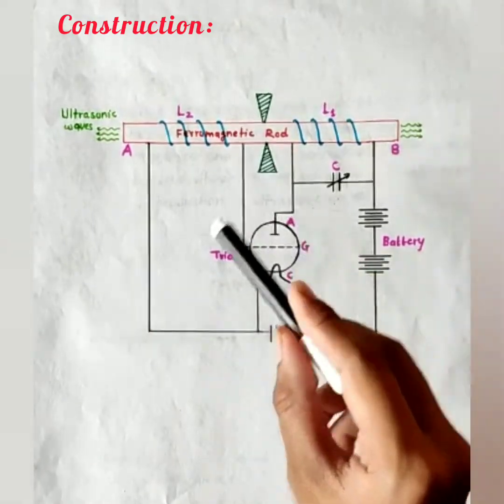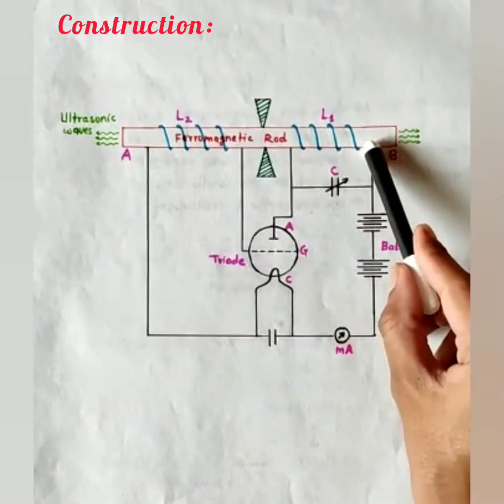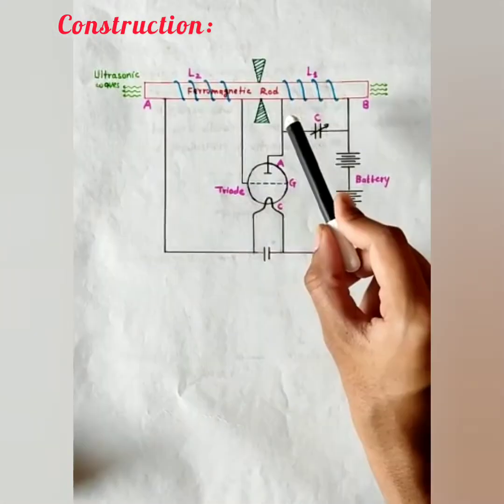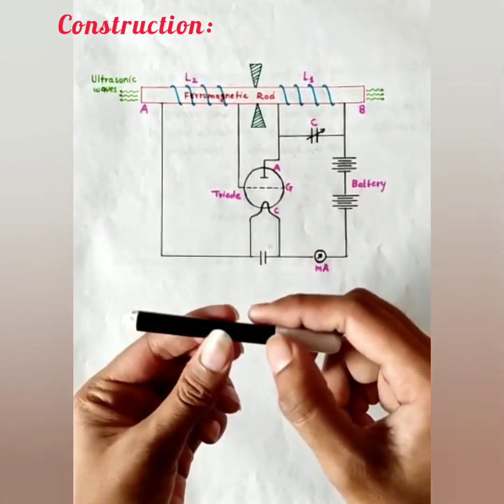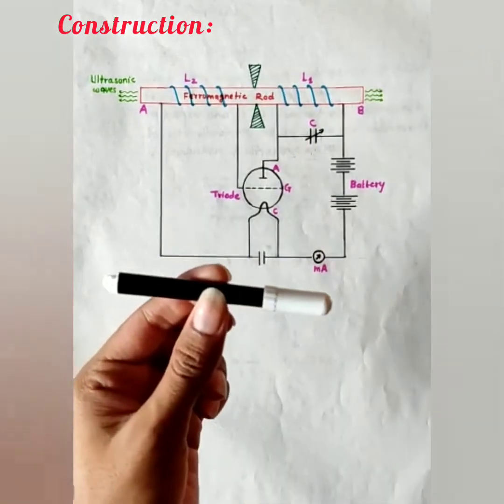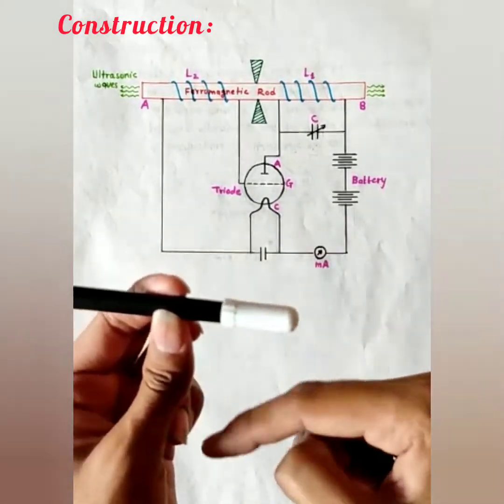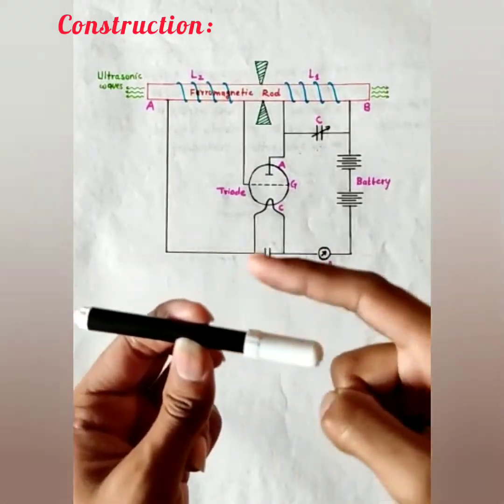Now here, there are two coils, coil L1 and coil L2 which are wound around the two ends of the rod. Suppose, this is the ferromagnetic rod which is clamped at the middle and the coil L1 and L2 are wound around this rod like this.